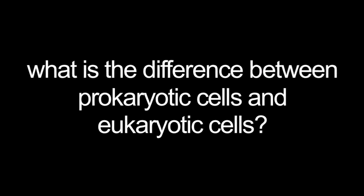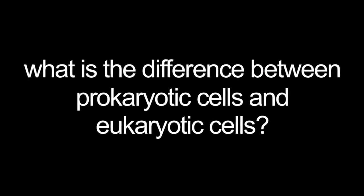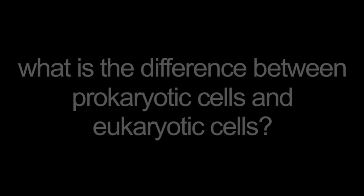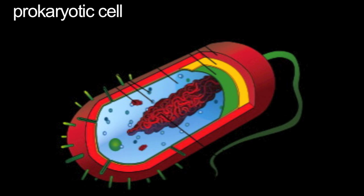What is the difference between prokaryotic and eukaryotic cells? Prokaryotic cells have no nucleus and no membrane-bound organelles. Prokaryotic cells are simple cells. They contain a cell wall, cell membrane, and ribosomes, and are bacteria only.